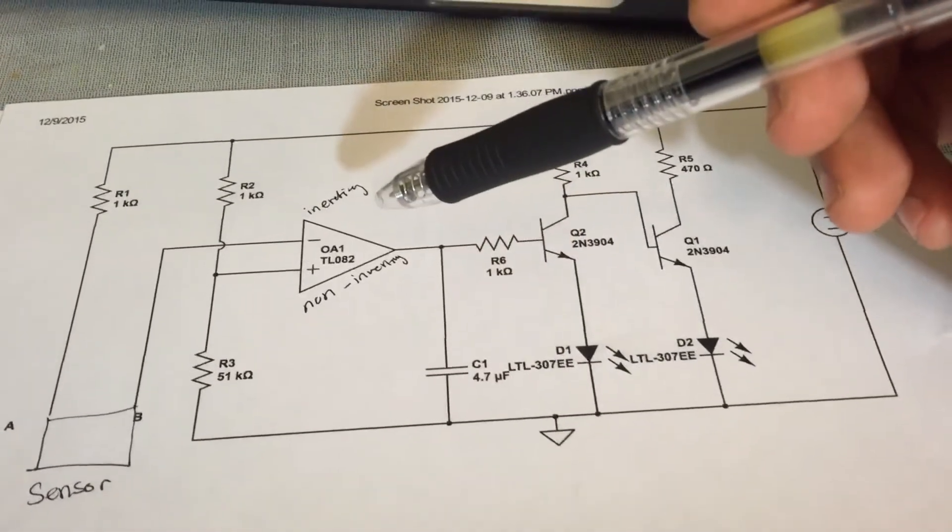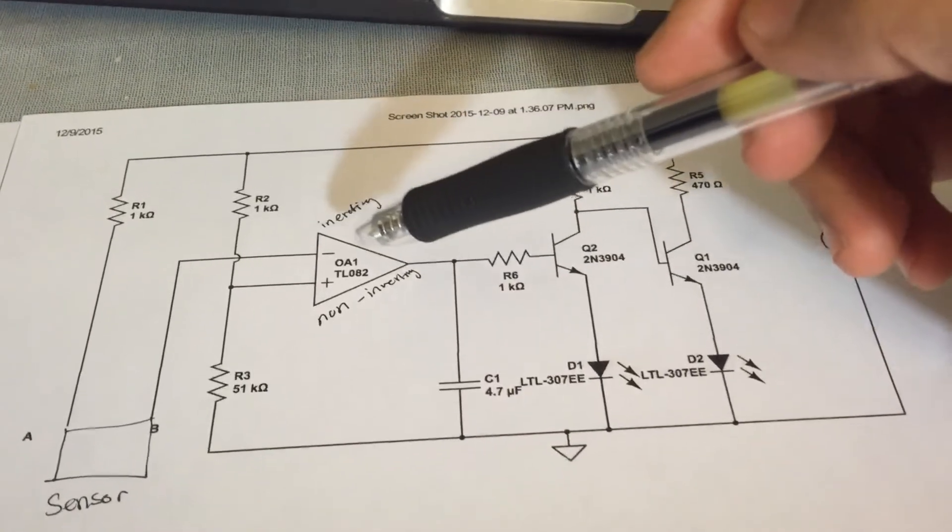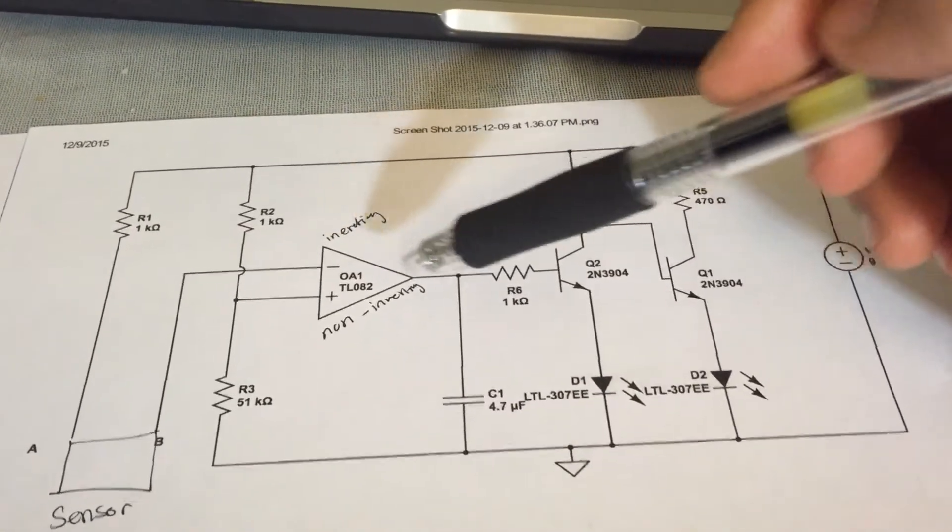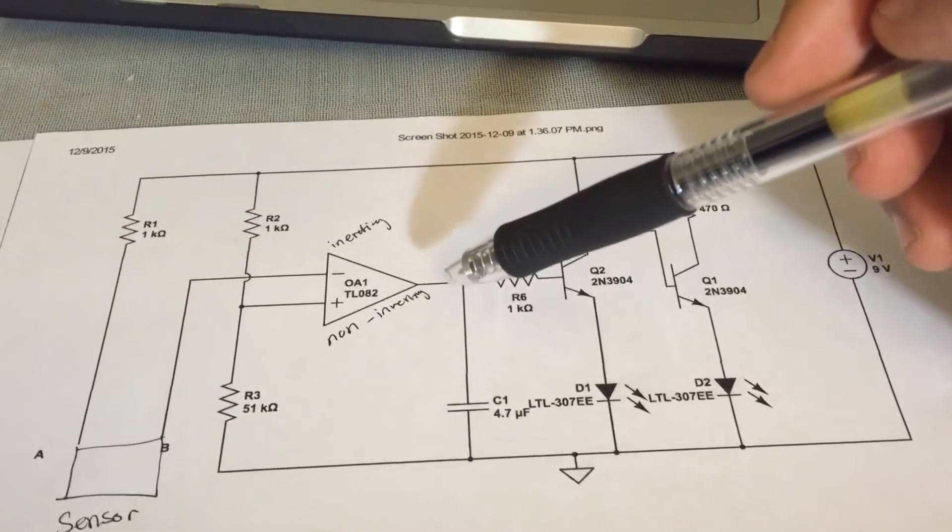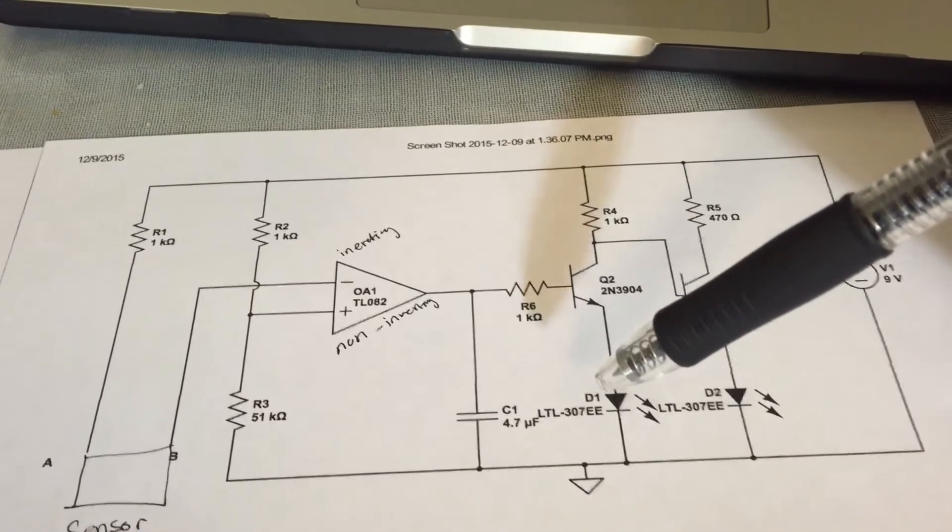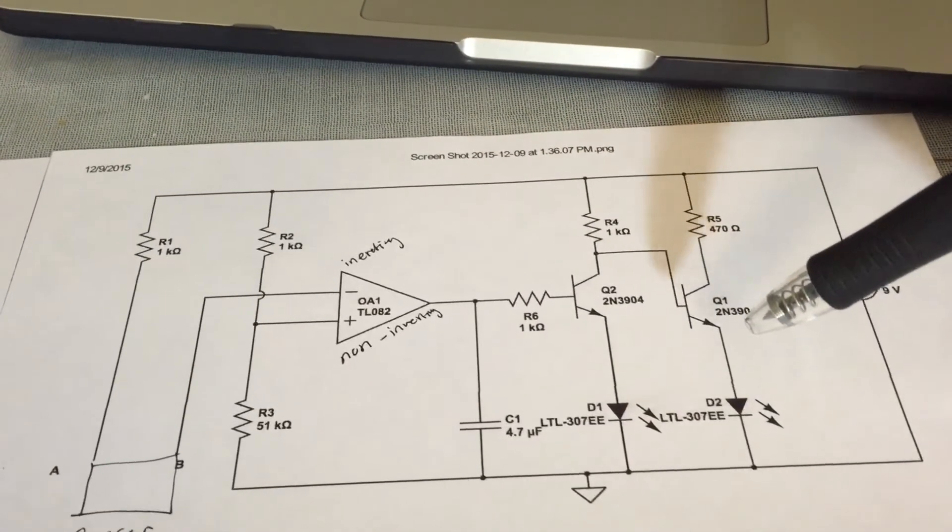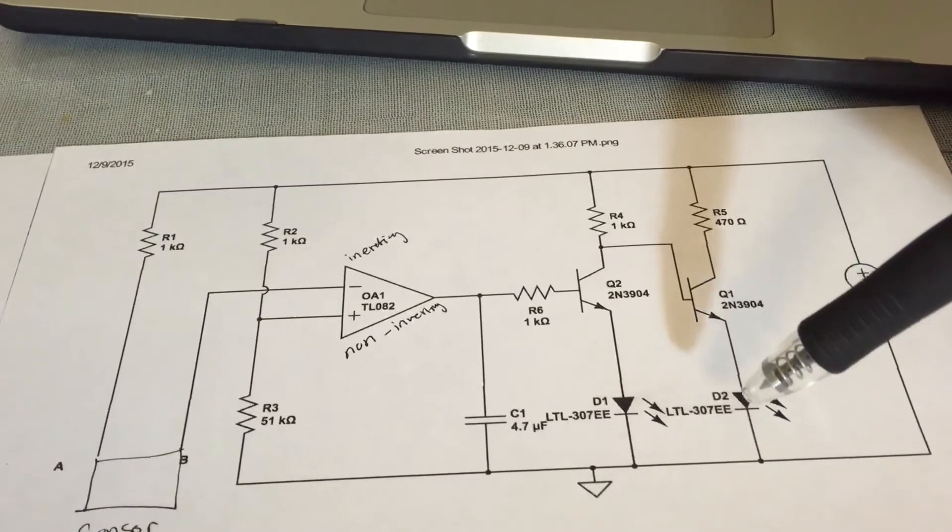When the sensor is moist, however, the inverting input receives higher voltage, resulting in a low current output which turns off this transistor and the red LED, making the Q1 transistor turn on and the green LED turn on.